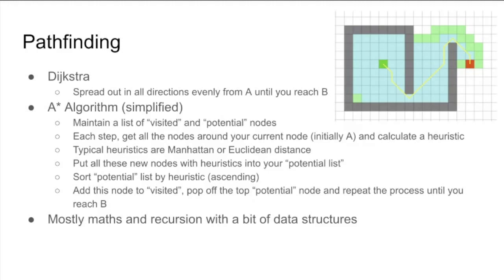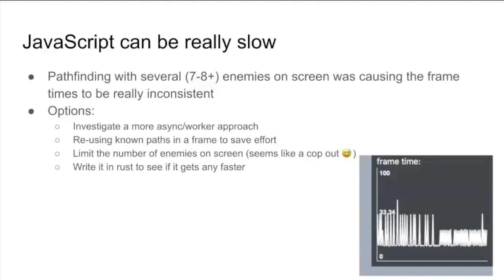We originally implemented this in JavaScript, and it was around 70 or 80 lines — not too horrendous. But it became pretty clear that with more than seven or eight enemies on screen, the frame times would just skyrocket. This was super frustrating to work with — I kind of thought JavaScript in a browser on my MacBook Pro would handle a bit more than that. We talked about different ways to approach this: moving things to web workers, reusing paths. And then I had the idea of writing it in Rust, since I'd been playing around with it a little on the side doing some Advent of Code and things like that.